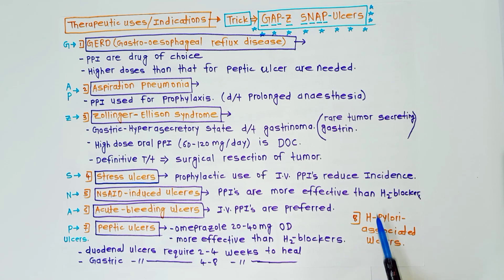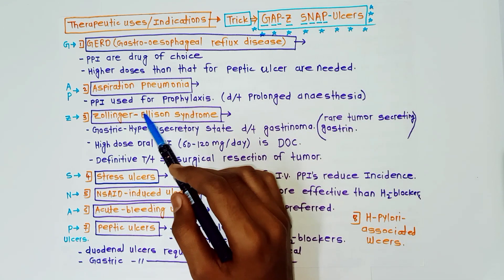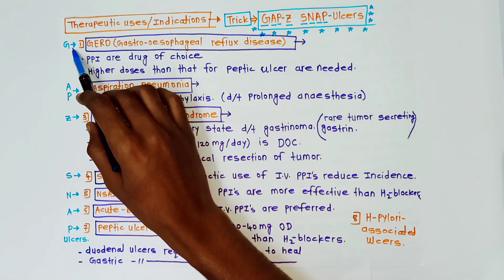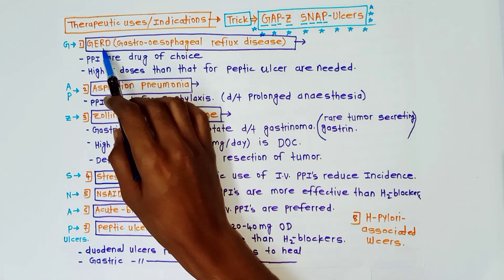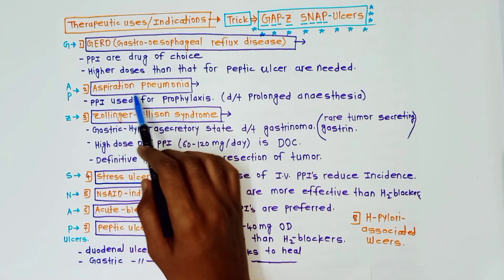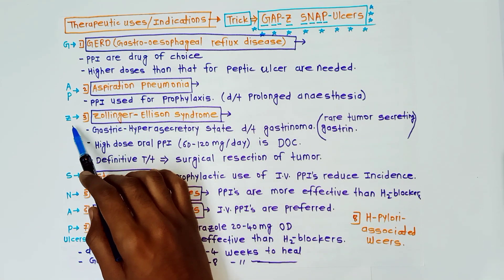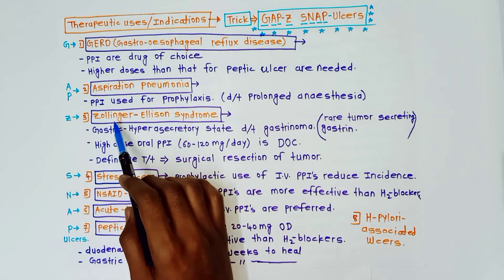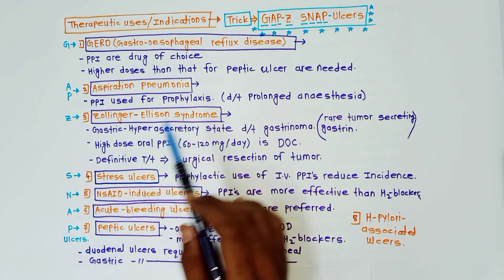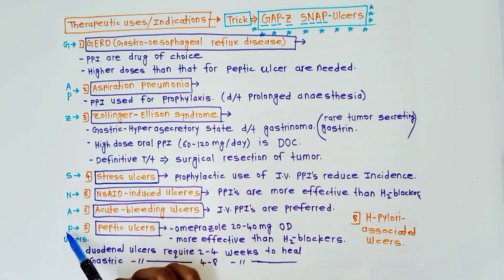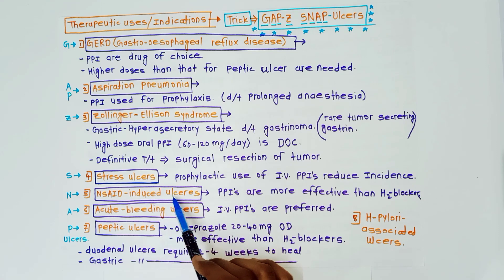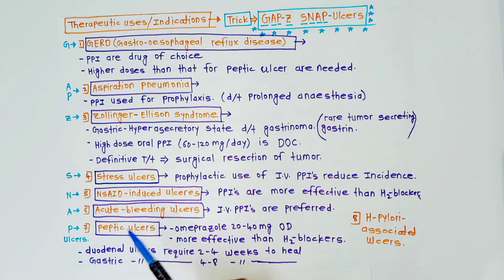Additionally, H. pylori-associated ulcers are an important use not included in the mnemonic. To recap: GAP stands for gastroesophageal reflux disease, aspiration pneumonia; Z for Zollinger-Ellison syndrome; and SNAP for stress ulcers, NSAID-induced ulcers, acute bleeding ulcers, and peptic ulcers. Thank you for watching — if you liked this video, please subscribe to my channel.